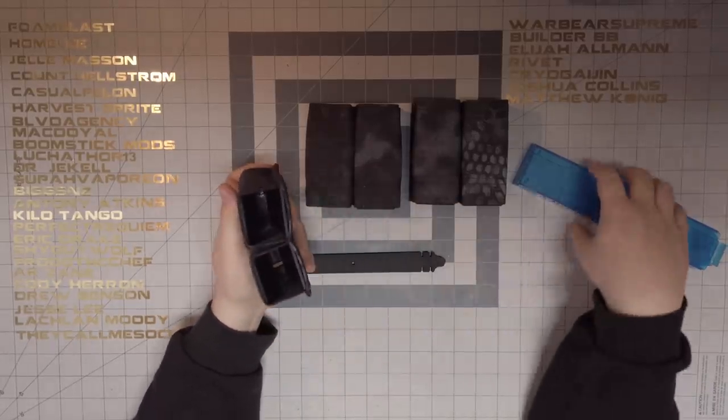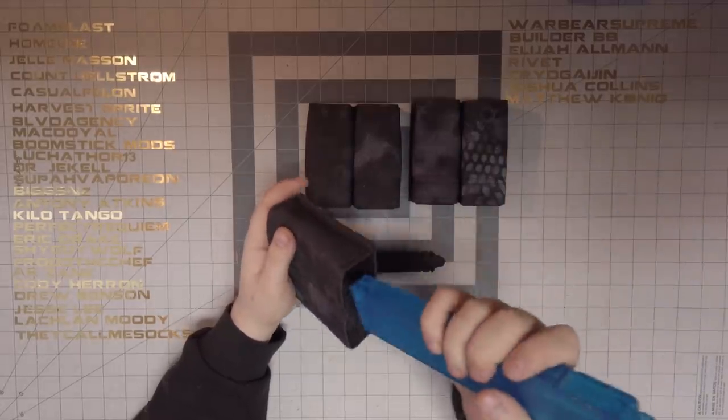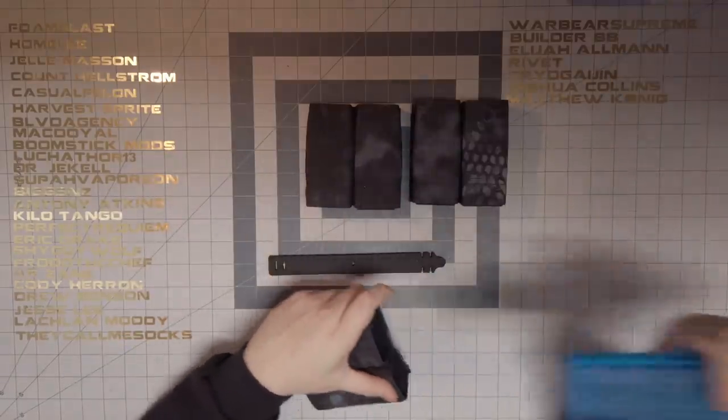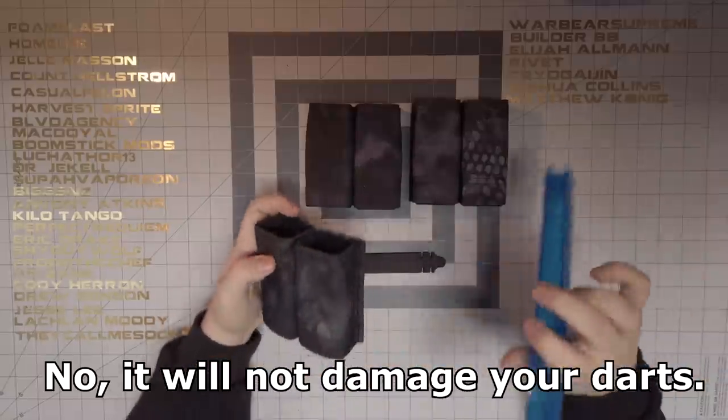But the coolest part is if I take one of these Talons and I put it in there, it friction fits it in place. Like you can pull it out, but it is not going to come out no matter how hard I try. And I can put the magazine in both ways and it's really freaking cool.